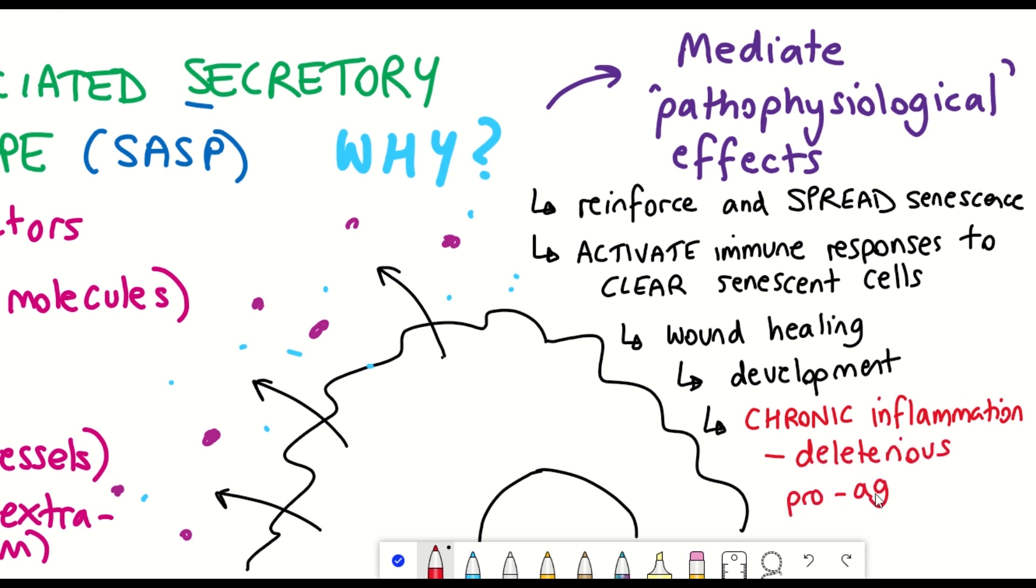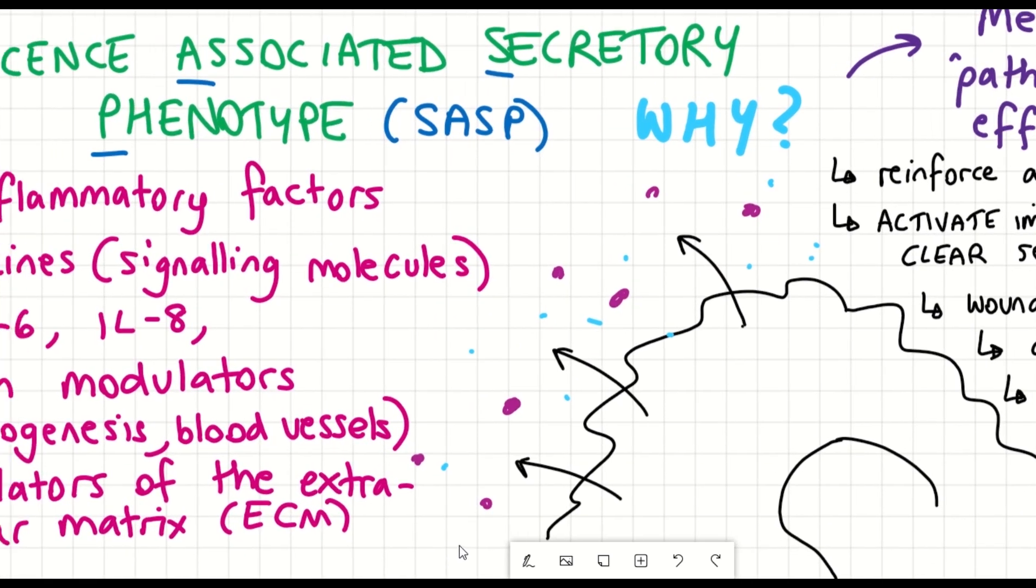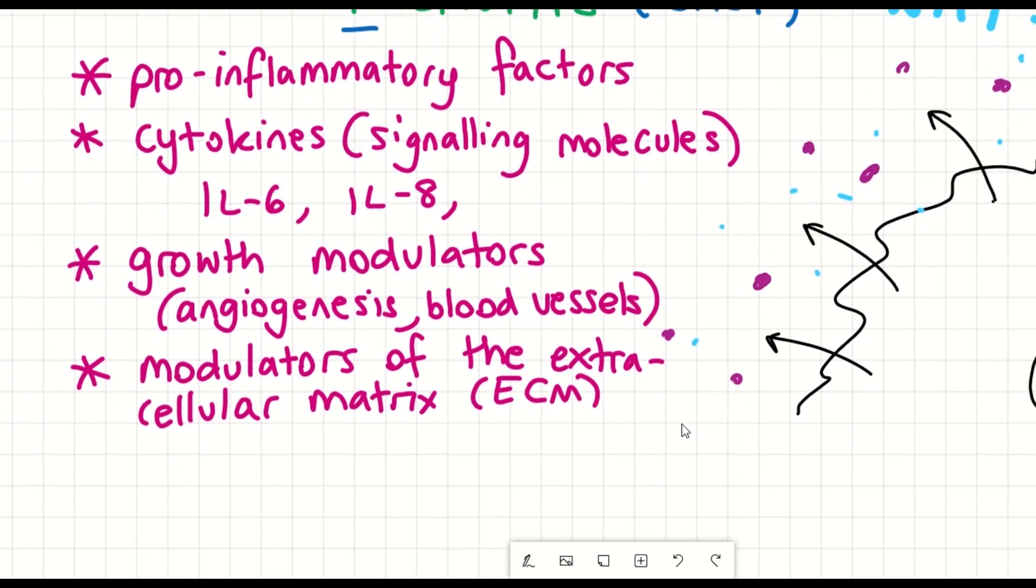However, if senescent cells are not removed, because they express this inflammatory SASP, it can result in chronic inflammation, which can have deleterious pro-aging effects. And so it is also sometimes referred to as inflammaging.